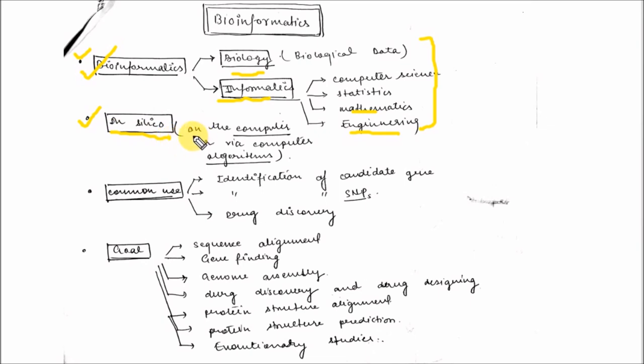What is in silico? In silico is on the computer or via computer algorithms. These are the various common uses of bioinformatics: identification of candidate genes, identification of SNPs in drug discovery.